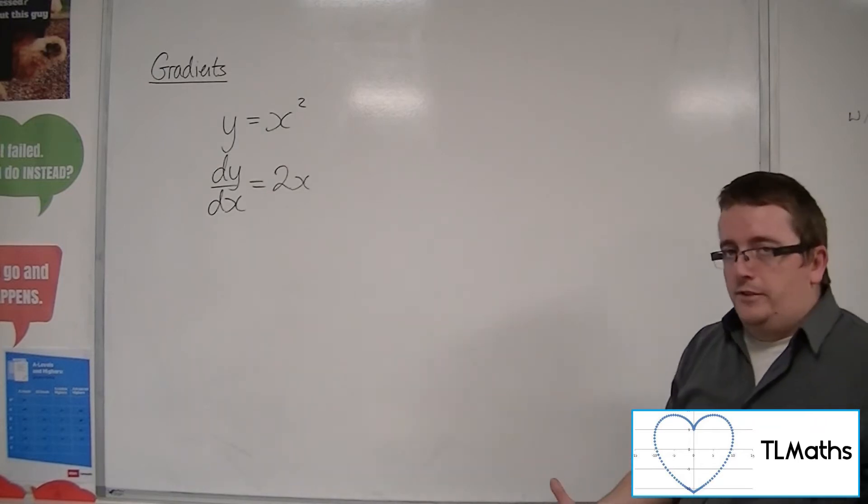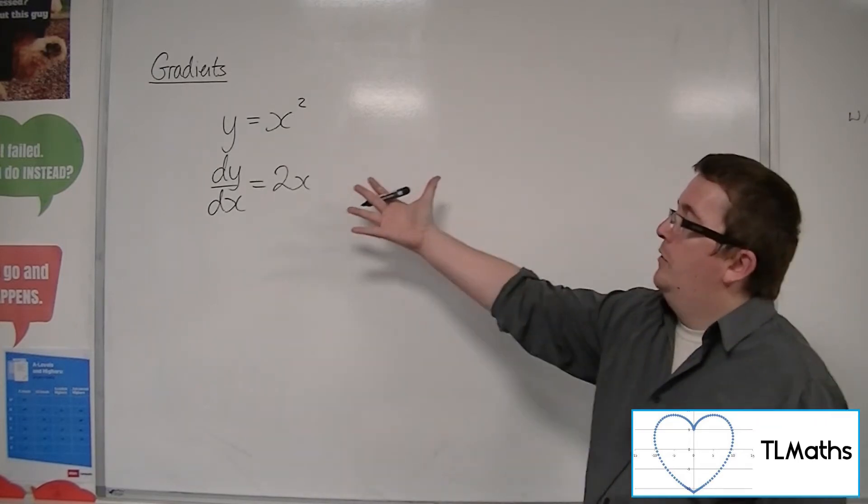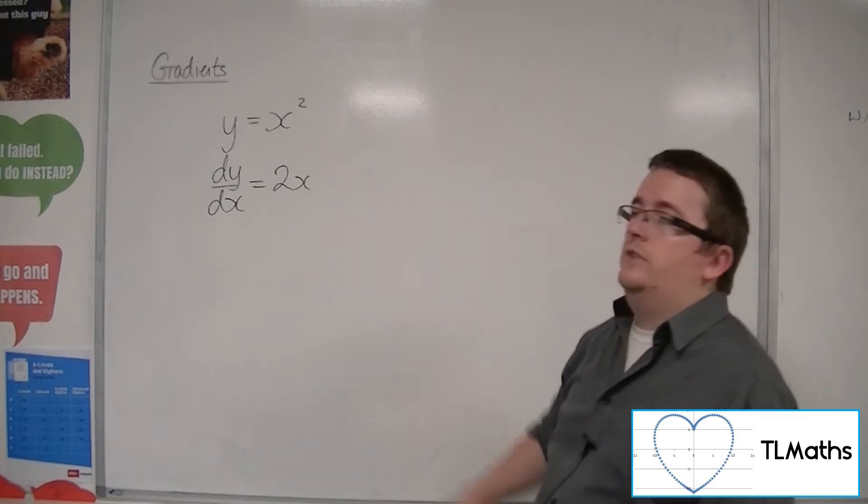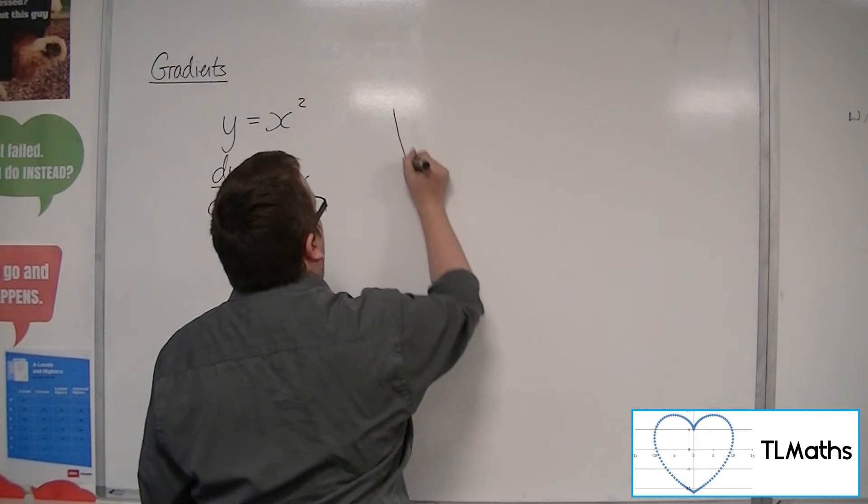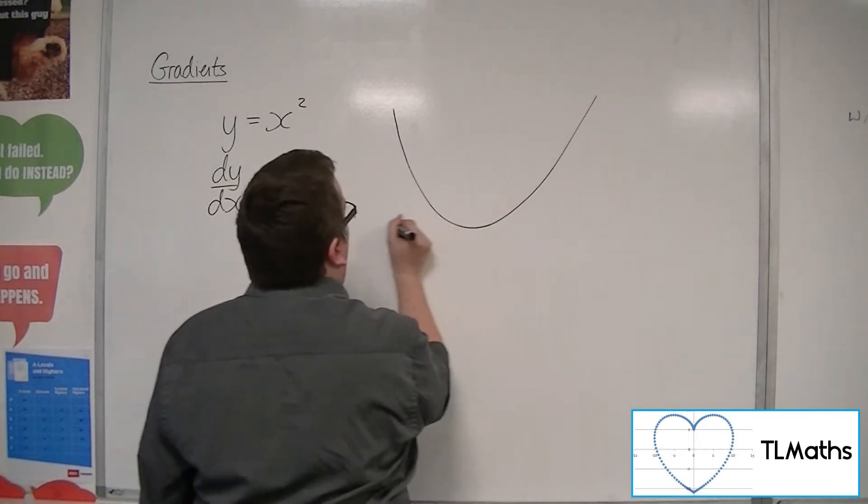Now what does this represent? Well, this represents how the gradient of the curve changes at a particular point. So you've got this curve of y equals x squared.